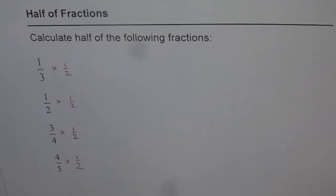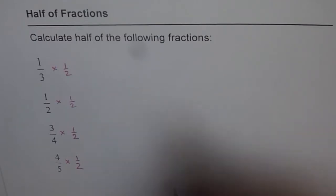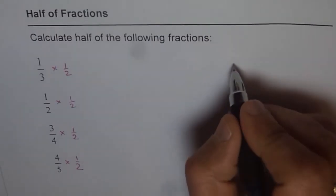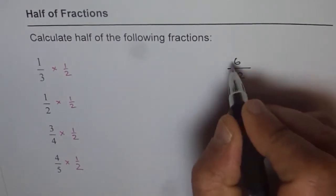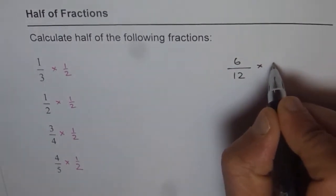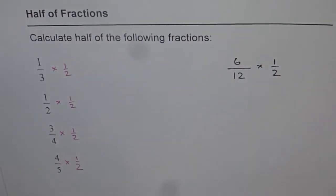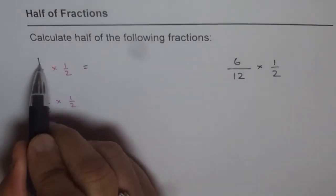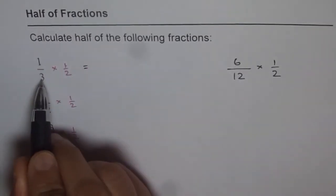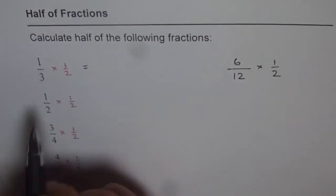If you have to calculate half of any fraction, for example, if you want to find half of 6 over 12, then what you do is just multiply it with half. That is what you need to do. And then the second step is to multiply numerator with numerator and denominator with denominator.